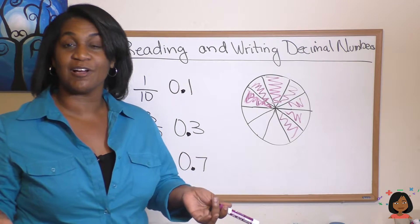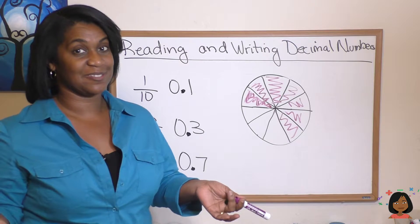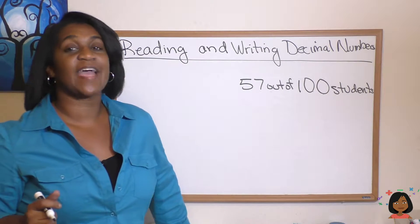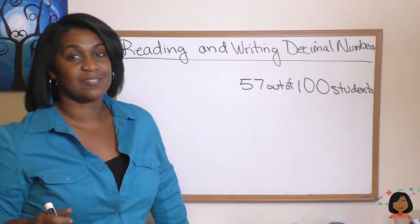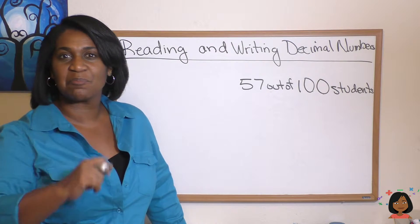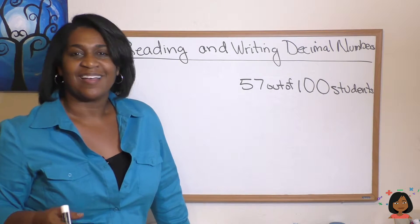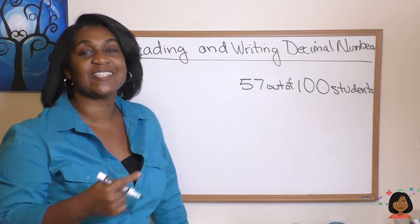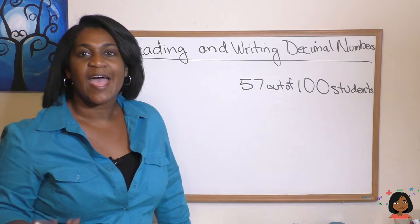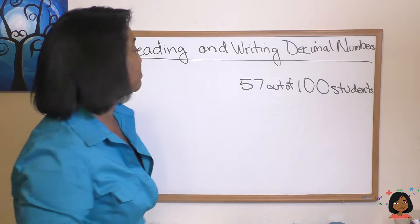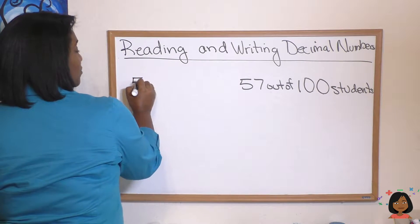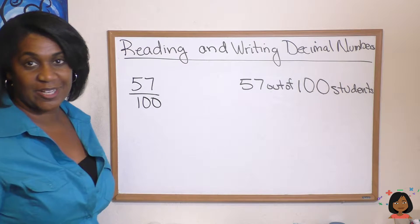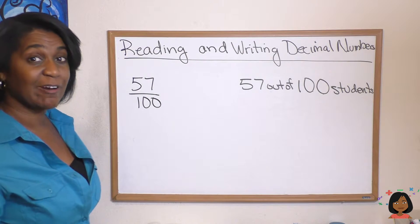Let's take a further look at how we write decimals. I have fifty-seven out of a hundred students — let's say they had chocolate milk today for lunch. So fifty-seven out of one hundred: how would we write that as a fraction? Well, literally just what I said — fifty-seven out of one hundred.